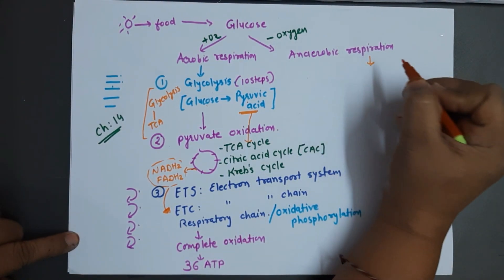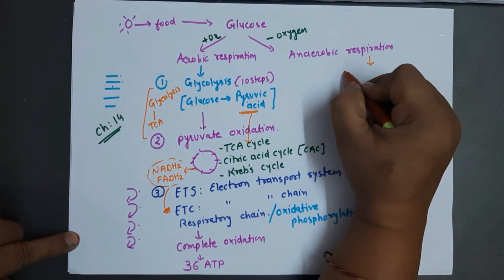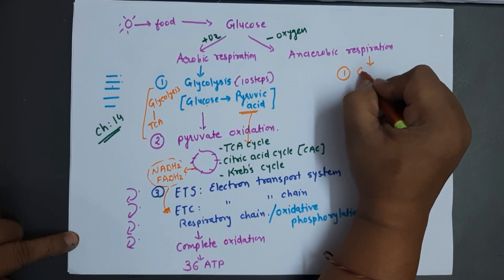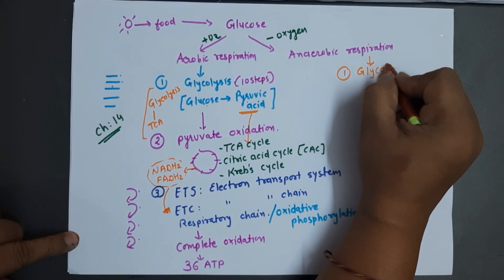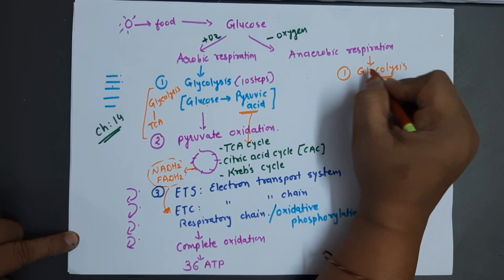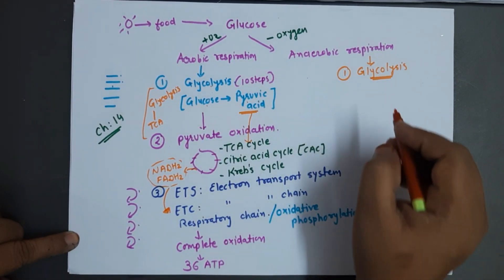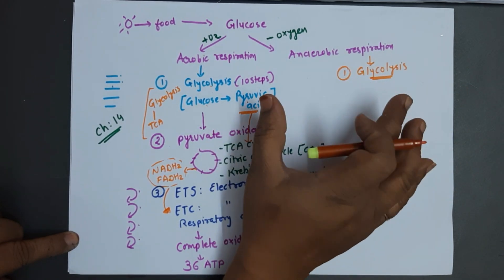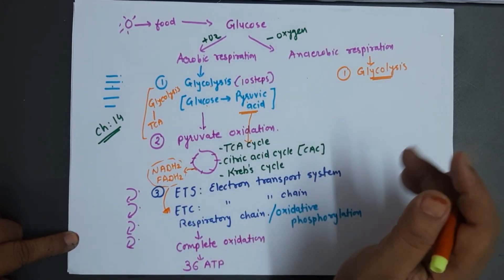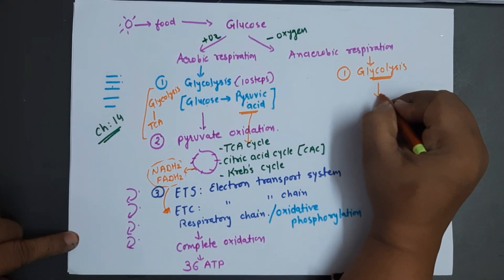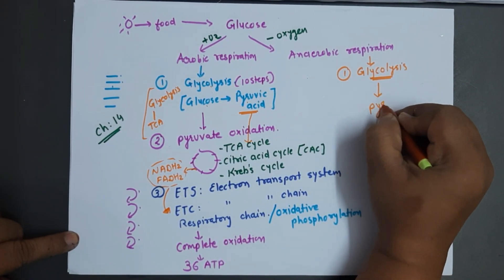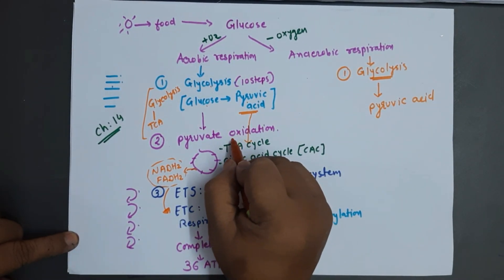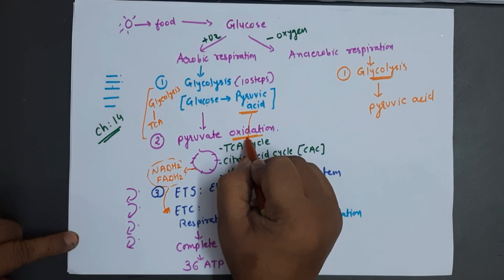Now anaerobic respiration — a surprising point: whether aerobic or anaerobic respiration, glycolysis is common. It is a common step in both aerobic and anaerobic respiration. So in both pathways, the product at the end of glycolysis is pyruvic acid.